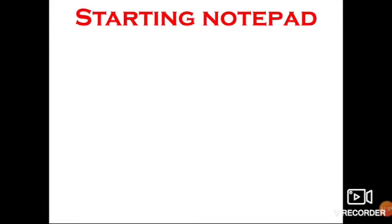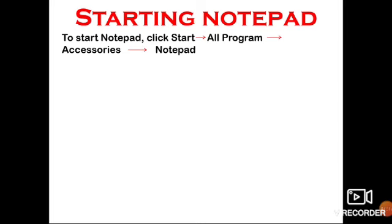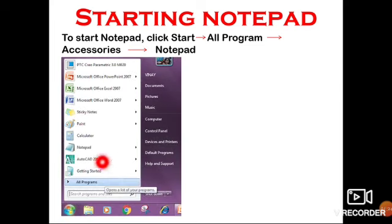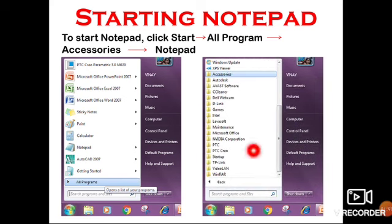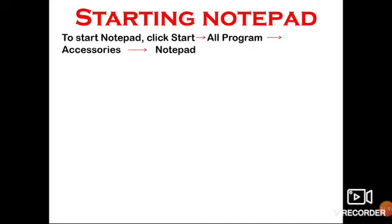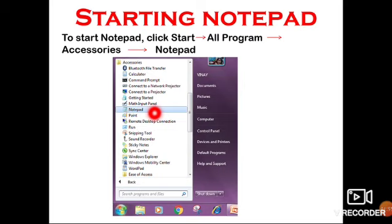How to start the Notepad? So children, whenever you want to start Notepad, first you have to click on Start button which is present at the bottom left of your screen, that is Windows icon. Click on it and click on All Programs. You can see all programs here. Next click on Accessories. When you click on All Programs, then you have to select Accessories, and in Accessories you get Notepad. So children, here you can find Notepad, and when you click on it the Notepad screen appears.